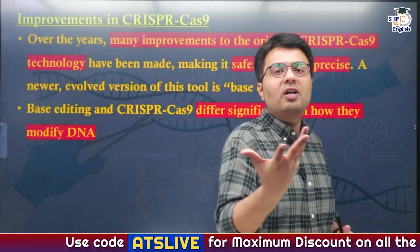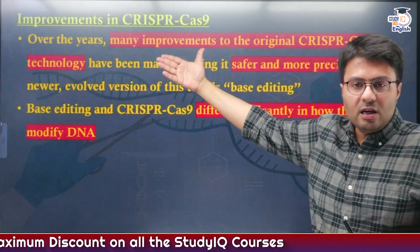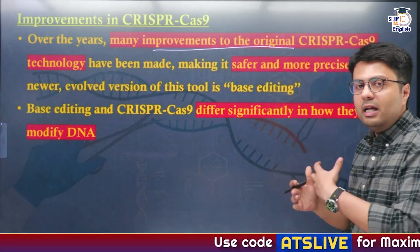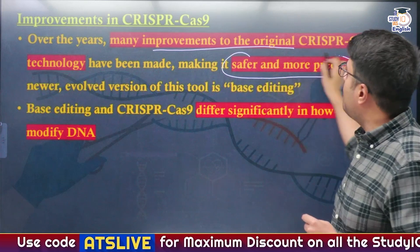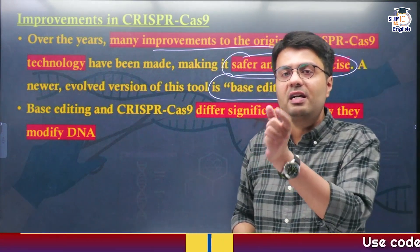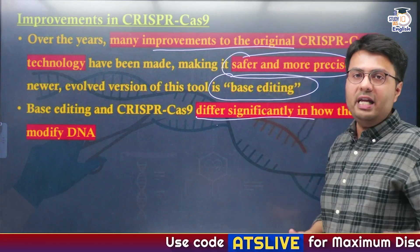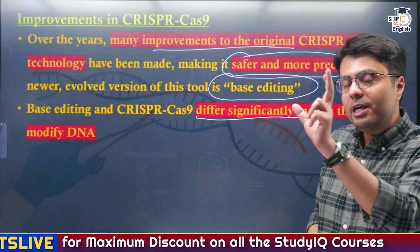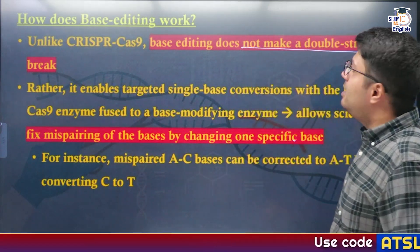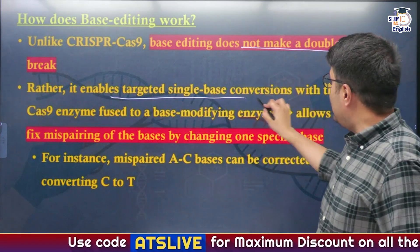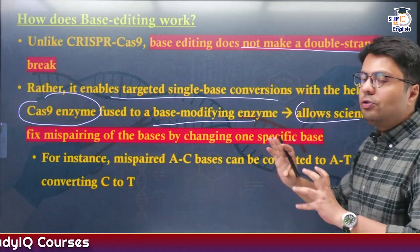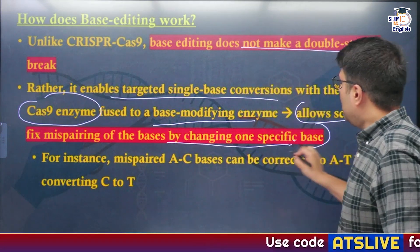Now let us understand how base editing works. Over the past 10 years, many improvements to the original CRISPR-Cas9 technique have been made by scientists to make it safer and more precise, and this evolved version is called the base editing tool. The difference between base editing and CRISPR-Cas9 is the way they modify the DNA structure. In base editing, it does not make a double-strand break. Instead, it targets a single base conversion with the help of the molecular scissor Cas9 enzyme, which is fused to a base-modifying enzyme, allowing scientists to repair only the particular pair of the nucleotide base.